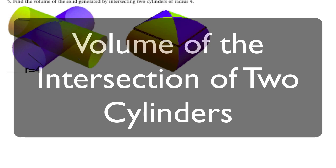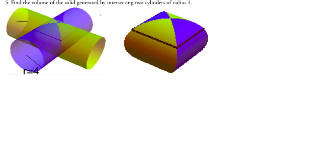Okay, so we want to find the volume of the solid generated by intersecting two cylinders, radius 4. We did the general case in another video, and here this is just an example doing it with actual numbers.